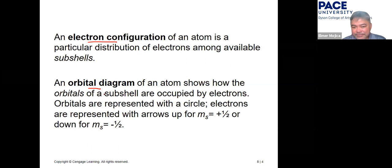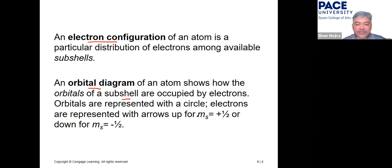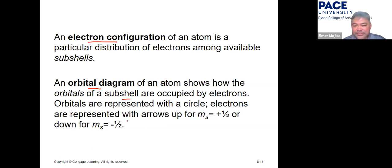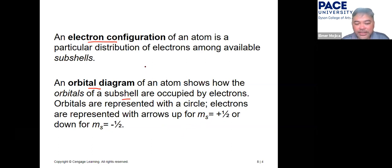Synonymous with electron configuration is the orbital diagram, which shows how the orbitals of a subshell are occupied by electrons. Orbitals are represented with a circle, line, or box, and electrons are represented with arrows: up for ms = +1/2 or down for ms = −1/2.